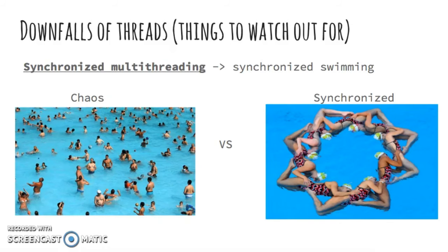As we touched upon in the pros and cons list, multi-threading is non-deterministic, meaning execution order is not always known. Therefore, when writing multi-threaded code, you must safeguard against your threads modifying sections of the same code in multiple places or in an undesired order. Much like synchronized swimming, multi-threading could result in unwanted results or collisions if not done carefully. In programming, getting this ordering right to execute your program with a correct and determinate answer every time is called synchronization.